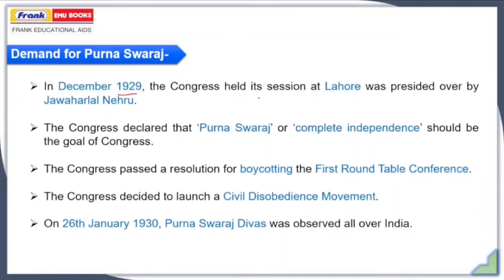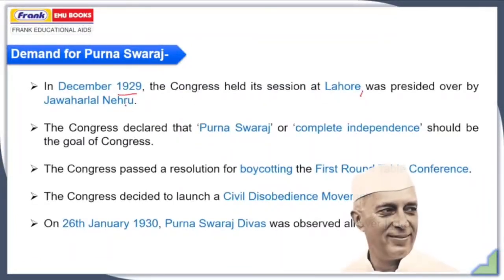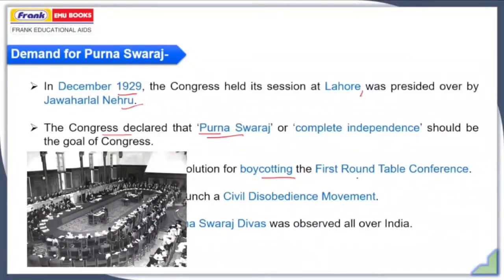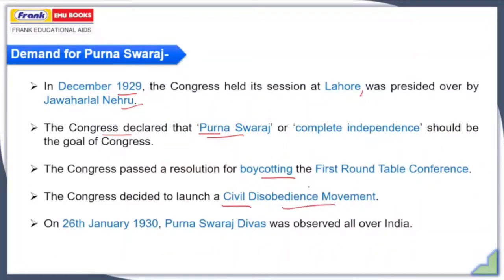The next reason was the demand for Purna Swaraj. In December 1929, the Congress held a session at Lahore presided over by Jawaharlal Nehru, the young Congress leader, who was also made President of Congress. The Congress declared that Purna Swaraj, or complete independence, should be their goal — they would not accept anything less. Congress also passed a resolution boycotting the first roundtable conference and decided to launch a Civil Disobedience Movement. They declared that on 26 January 1930, Purna Swaraj Day was to be observed all over India, which was successfully observed.